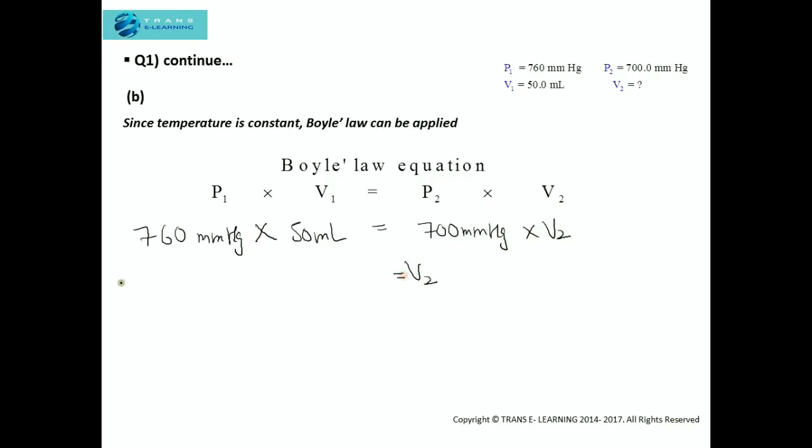So V₂ will be 760 mmHg × 50 mL divided by 700 mmHg. The units of the pressure will get nullified and V₂ will be 760 × 50 mL divided by 700.